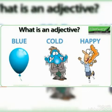Прилагательное в английском языке — часть речи, отвечающая на вопросы «какой», «какая», «какое», «какие» и обозначающая признак предмета. Прилагательное описывает предмет или объект по цвету, форме, качеству, размеру, характеру, происхождению и свойствам. What is an adjective?